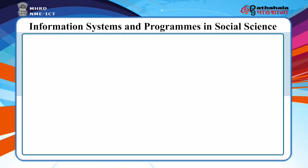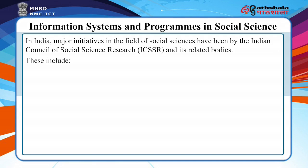Information Systems and Programs in Social Sciences. Social sciences are the study of human society and of individual relationships in and to society. It is a scholarly or scientific discipline that deals with sociology, psychology, anthropology, economics, political science, and history. In India, the major initiative in the field of social sciences has been by the Indian Council of Social Science Research and its related bodies.